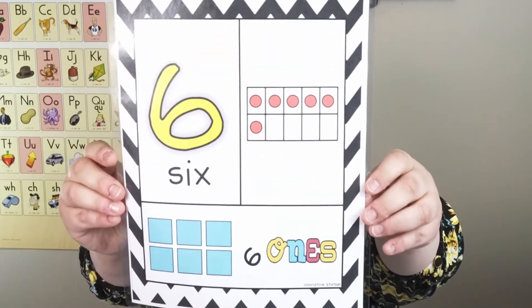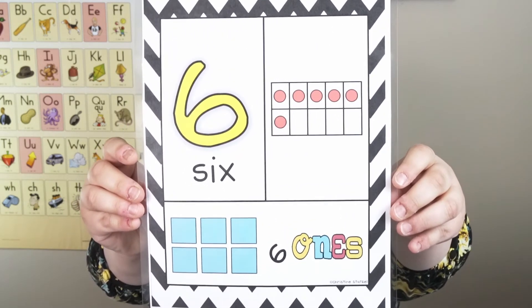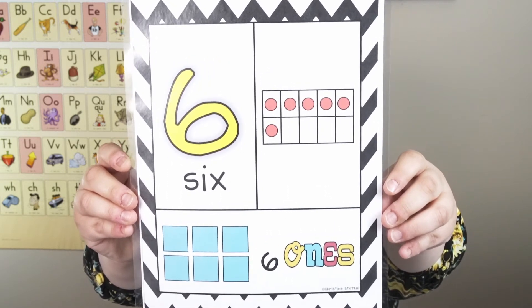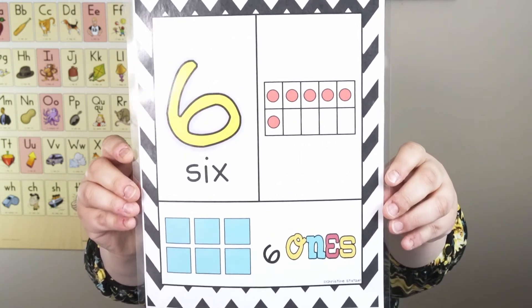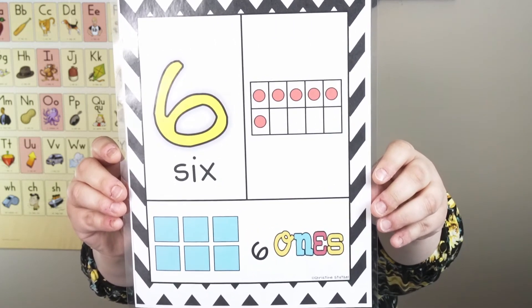Good job, my friends. Here we go — here's our next one. What number is this one? Do you know this number? Use your strategies. Did you say six? You got it — great job, my friend. My friends are doing such a good job with recognizing their numbers and using their strategies. Even if they don't know that number, they can still count those red dots — that's a good strategy.